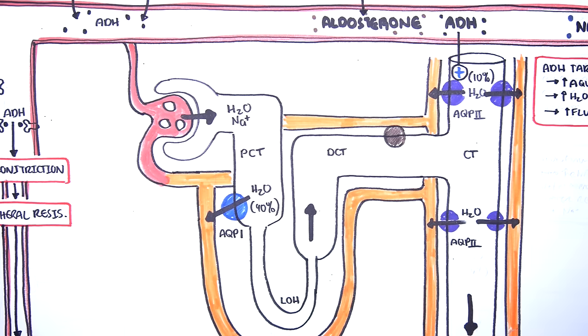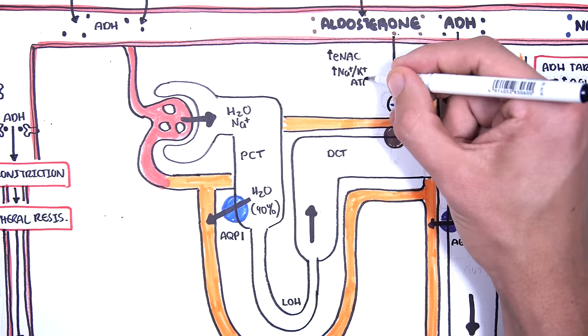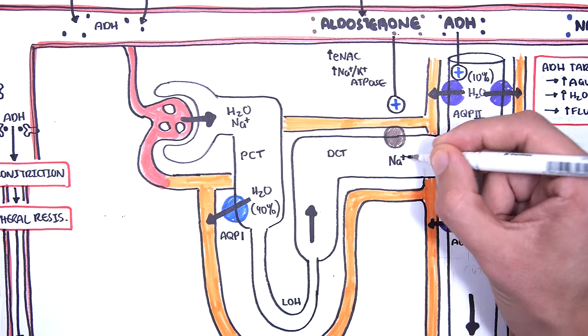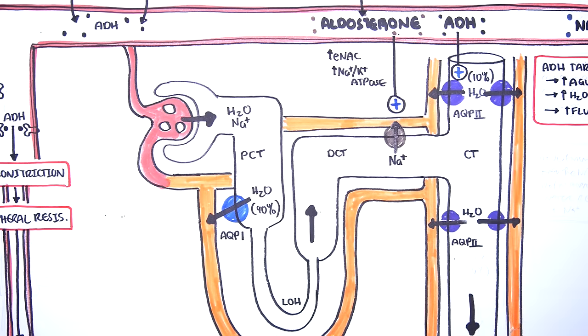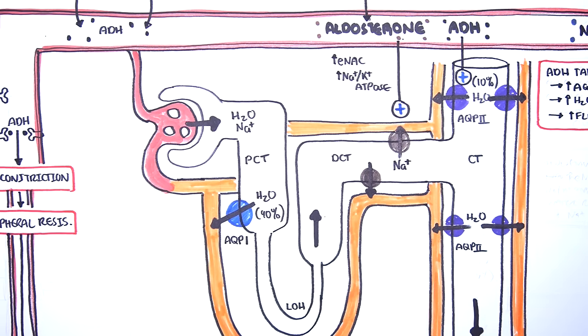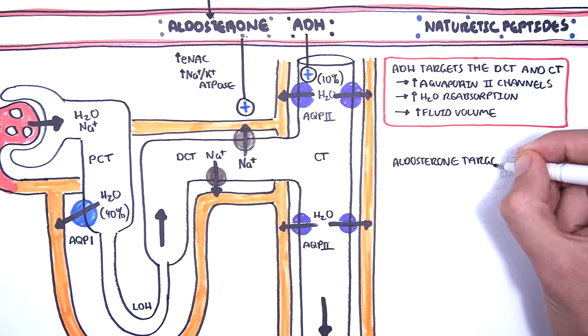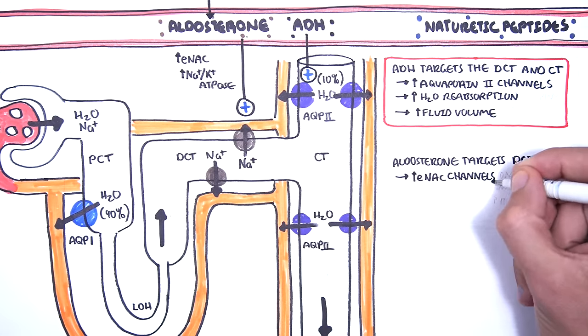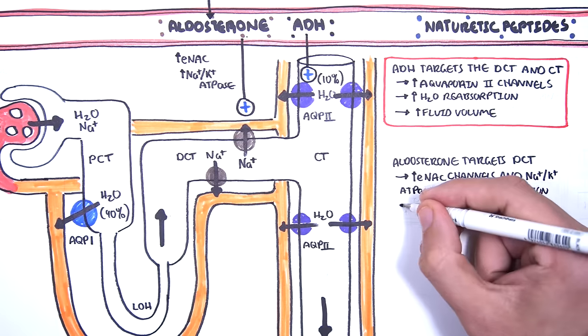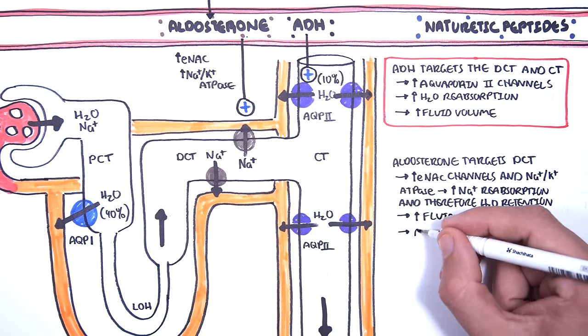Aldosterone travels to the distal convoluted tubule of the nephron. Here it increases the expression of ENaC and sodium-potassium ATPase pumps. What this means is that aldosterone will essentially result in the reuptake of sodium from the nephron tubule into circulation. And as a general rule, water will follow sodium, and so you increase the reabsorption of water as well. So in summary, aldosterone targets distal convoluted tubules, where it will increase ENaC channels and sodium-potassium ATPase, which will lead to sodium reabsorption and therefore water retention, which will increase fluid volume and also decrease serum potassium at the same time.